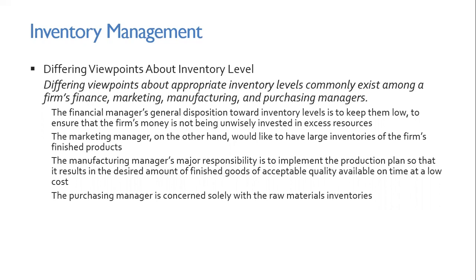The manufacturing manager's major responsibility is to implement the production plan so that it results in the desired amount of finished goods on time and at a low cost. They don't want last-minute instructions on how many inventories are needed because it keeps costs high — you have to buy extra raw materials, which could increase costs. The purchasing manager is concerned solely with raw materials inventories. They want their ordering to be predictable and consistent.